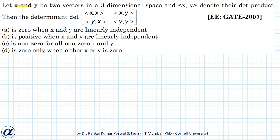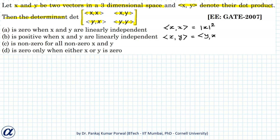In this question, we are given that x and y are two vectors in three-dimensional space and this notation denotes their dot product. Then the determinant of this matrix consists of: dot product of x with x, dot product of x and y, dot product of y and x, and dot product of y with y. The dot product of x with x will be magnitude of x squared, dot product of x with y or y with x will both be equal to magnitude of x times magnitude of y times cosine of the angle between them, and dot product of y with y will be magnitude of y squared.